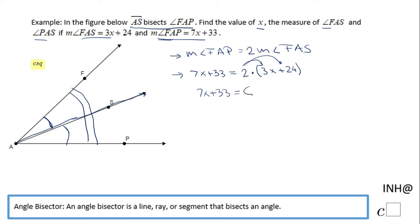Subtracting 6x from both sides, we have x + 33 = 48. Subtracting 33 from both sides, we end up with x = 15. We've finished the first part of the problem, which asks us to find x.